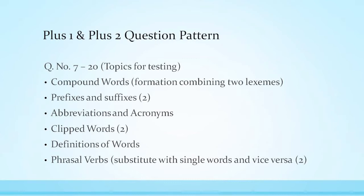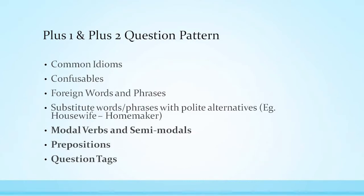Question number 7 to 20 covers topics for testing including compound words, combining words, prefix and suffix, abbreviations and acronyms, clipped words, definition of words, and phrasal verbs. Common idioms, confusables, and foreign words and phrases like pro bono.